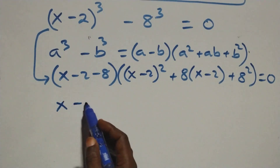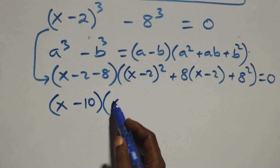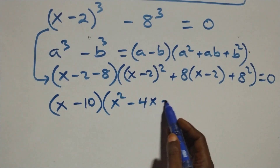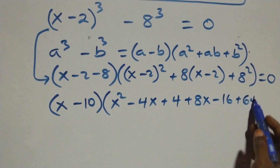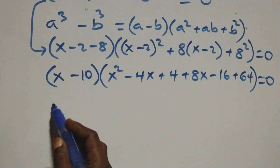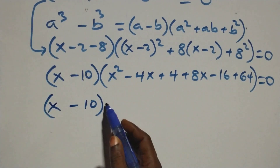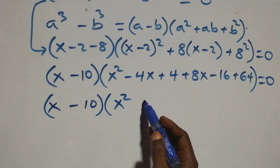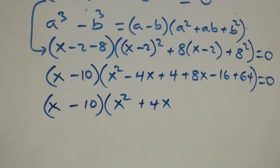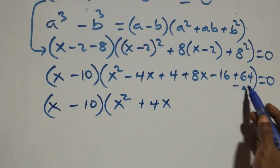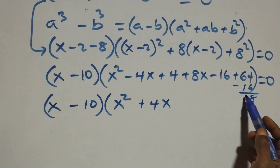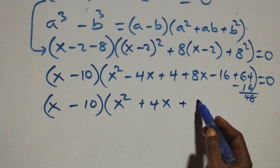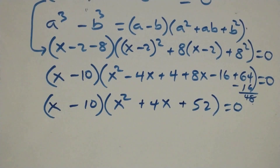Simplifying: (x − 10) times open bracket x² − 4x + 8x = plus 4x, and 64 − 16 = 48, and 48 + 4 = plus 52, close bracket, equals 0. So we have (x − 10)(x² + 4x + 52) = 0.